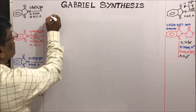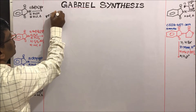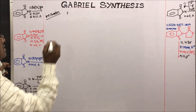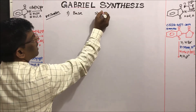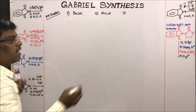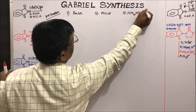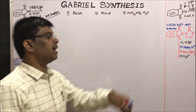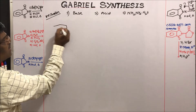Gabriel synthesis is also known as Gabriel amino acid synthesis. There are three ways we can do hydrolysis: first, base hydrolysis; second, acid hydrolysis; or third, hydrazine hydrate hydrolysis — also known as hydrazinolysis. Let us take the base hydrolysis mechanism.